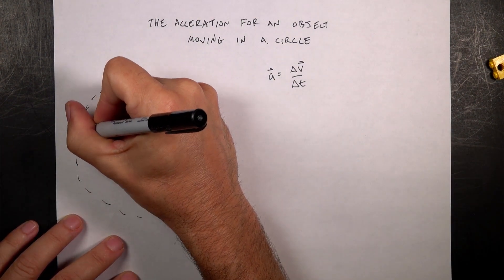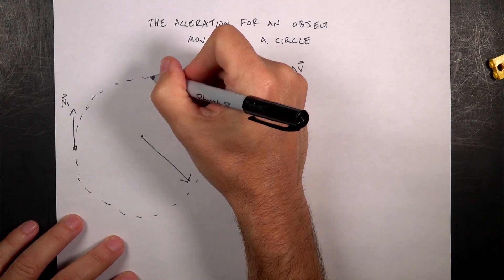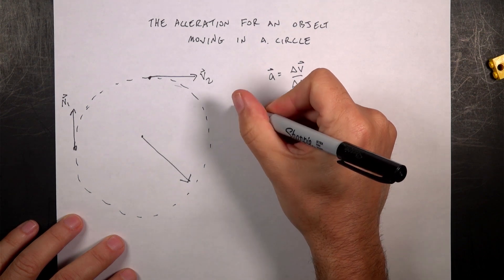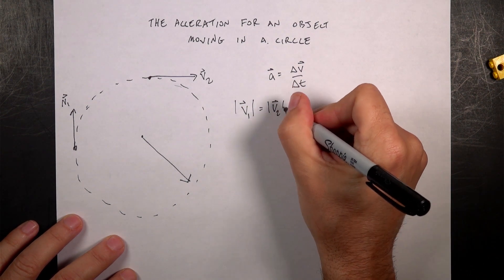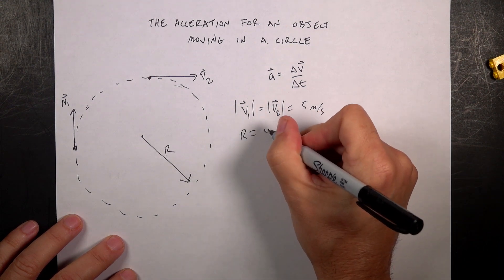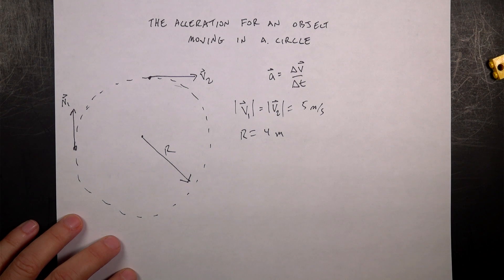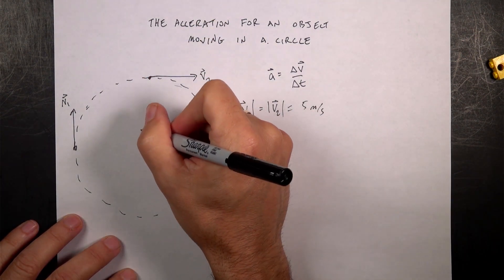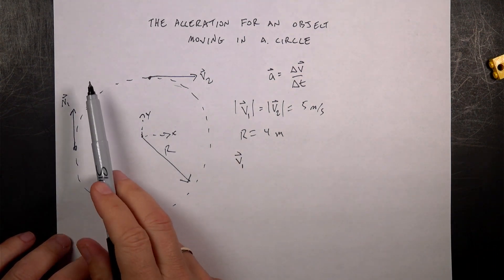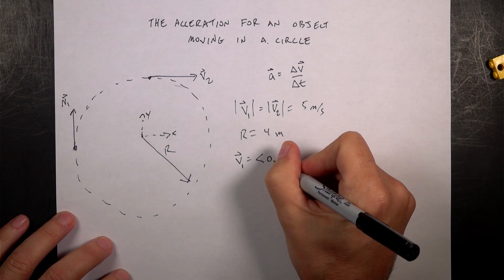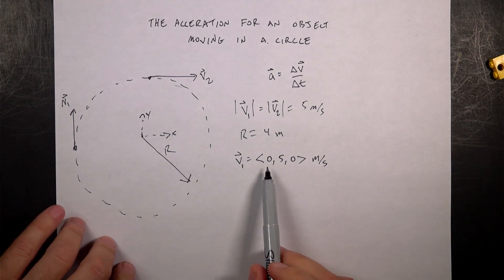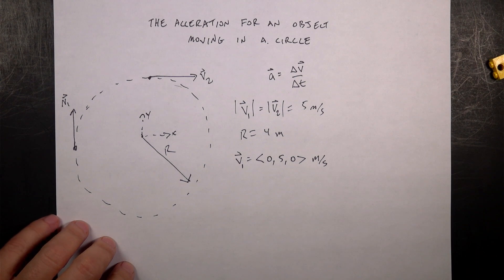The object starts right here with a velocity going in this direction — I'll call it v1. Then a little bit later it's up here moving with velocity v2. The speed is the same, so the magnitude of v1 equals the magnitude of v2. Let's say that's 5 meters per second, and the radius r equals 4 meters. I'll label the x-axis and y-axis. Then v1 is in the positive y direction, so I can write it as the vector (0, 5, 0) meters per second, using ordered-pair notation with x, y, and z components.